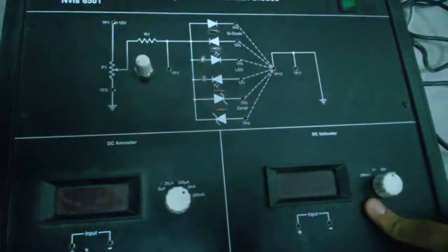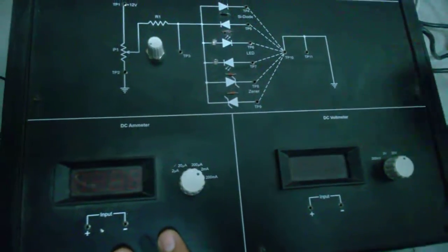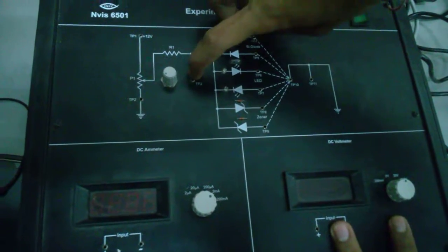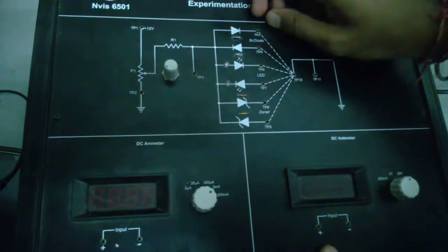So first we have to connect the ammeter into the series and the voltmeter in parallel with the diode to calculate its voltage and its current.